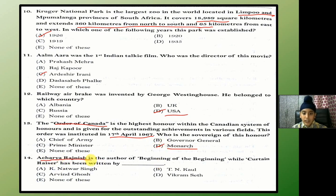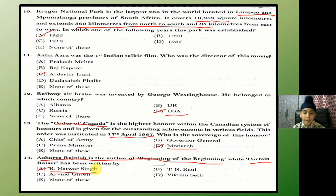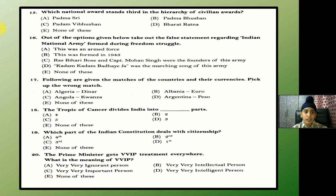Acharya Rajneesh is the author of 'Beginning of the Beginning,' while 'Curtain Raiser' has been written by A.K. Natwar Singh. Which national award stands third in the hierarchy of civilian awards? The answer is B — Padma Bhushan.